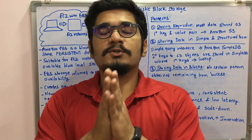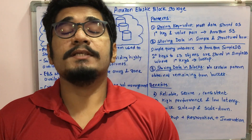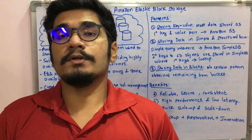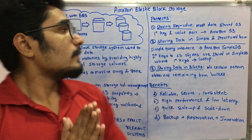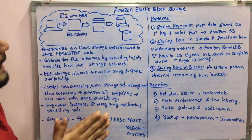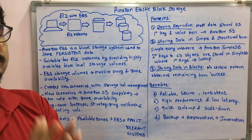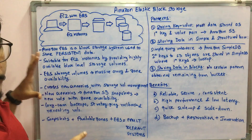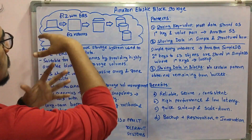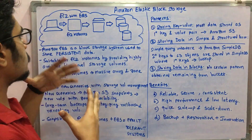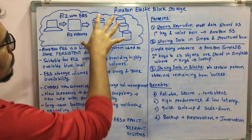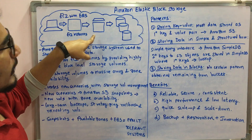Welcome back to the channel. Today we will be looking at Amazon EBS, that is the Elastic Block Storage, which is used for storing persistent data. Let's begin by looking at this diagram of where EBS actually sits. You have your host computer or system, and then you have some EC2 instances merged with the EBS. EC2 is nothing but the Elastic Cloud Compute.